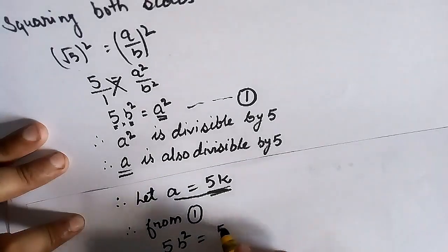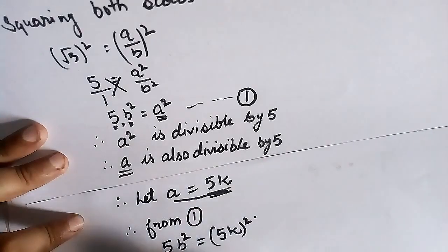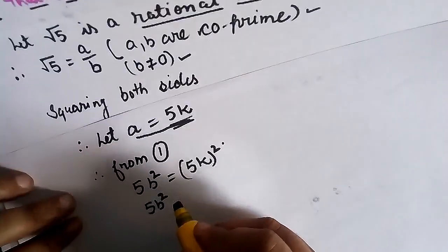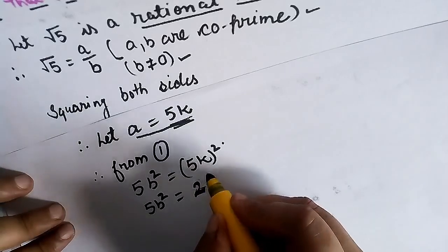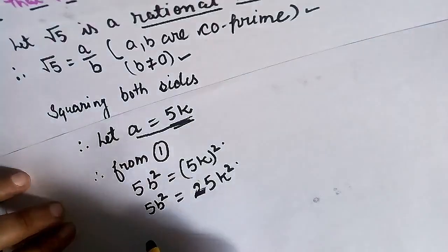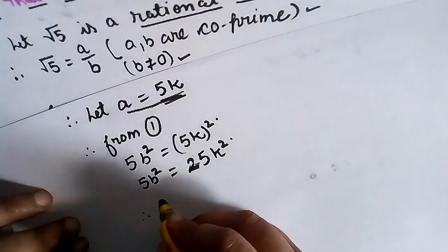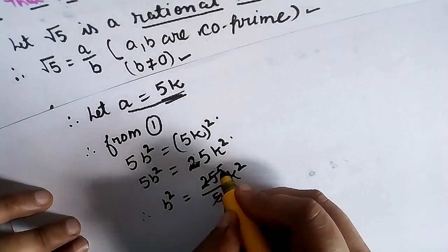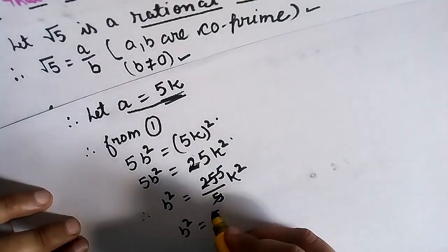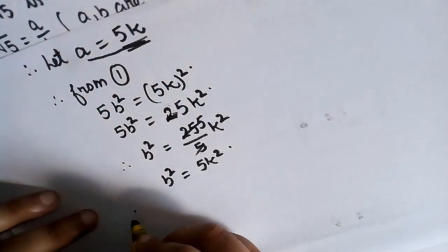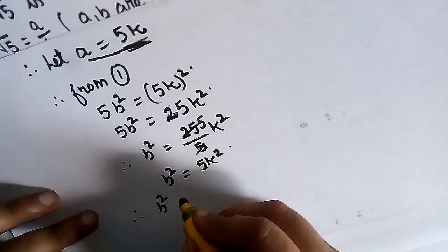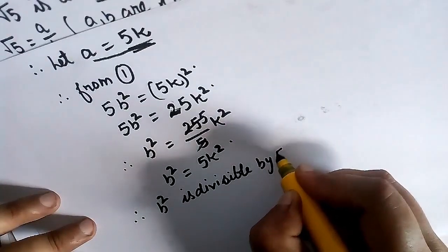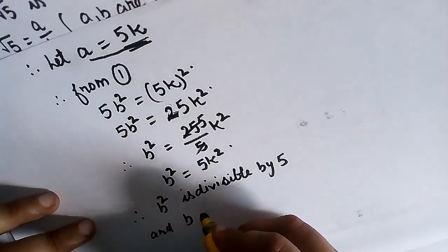From b² = 5k², we get that b² is also a multiple of 5, so b² is divisible by 5. From here, b is also divisible by 5. But in the beginning of the question, we supposed that a and b are coprime — meaning their common factor is only 1, and they are commonly divisible by 1 only. But here, both a and b are divisible by 5.